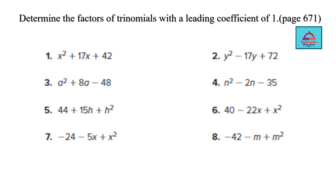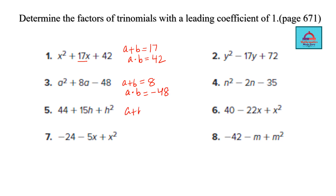Now we use the method of middle term splitting. The concept involves finding two numbers a and b such that their sum equals the coefficient of the middle term and their product equals the constant term c. For example, sum equals 17 and product equals c, or sum equals 8 and product equals −48.